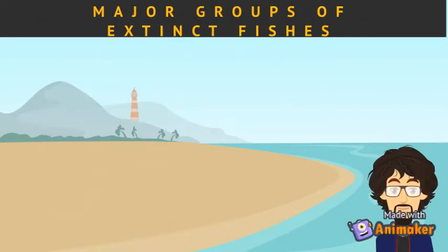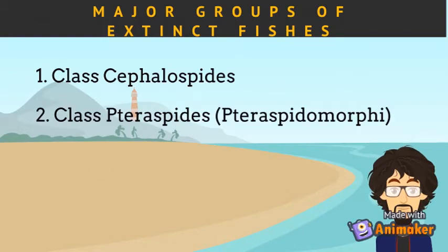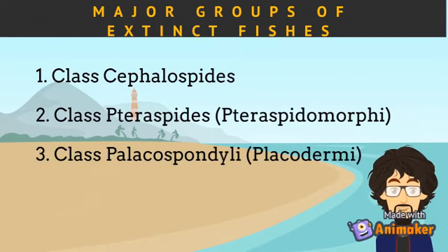There are four major groups of extinct fishes: Class Cephalaspides, Class Teraspides or Teraspidomorphy, Class Polacospondyli or Placodermy, and Class Acanthidii.